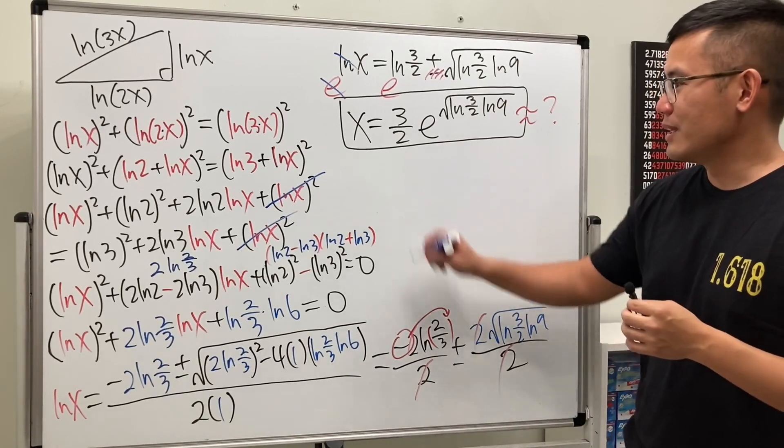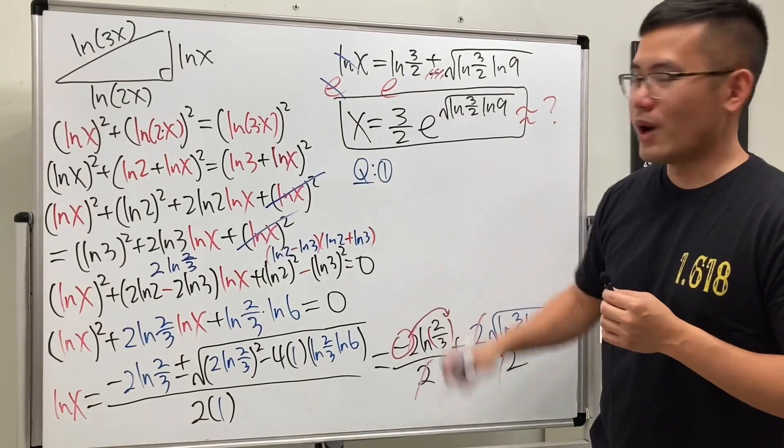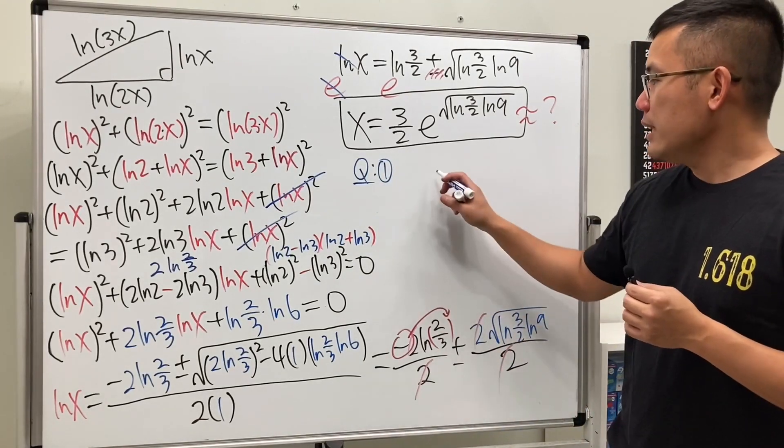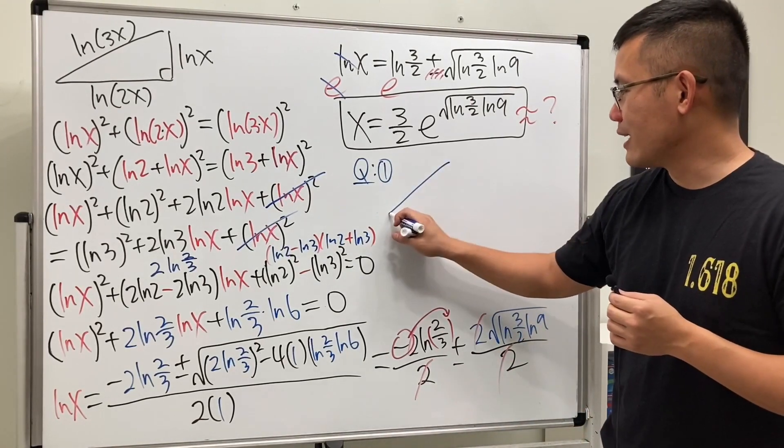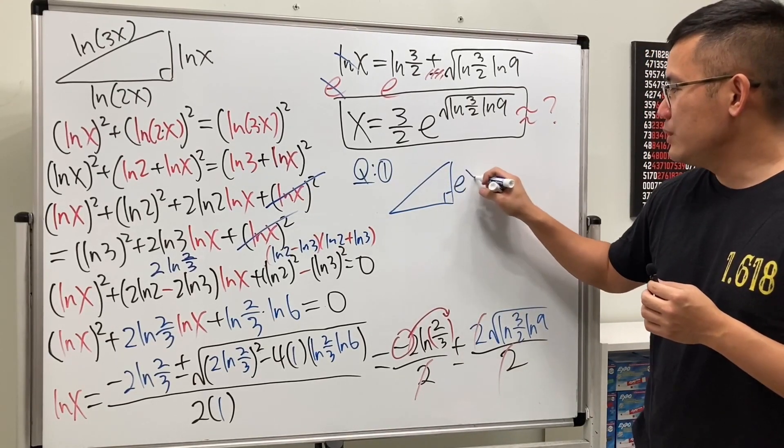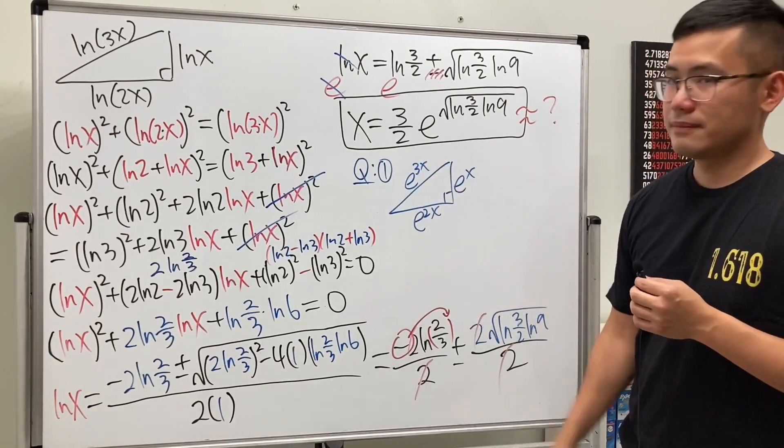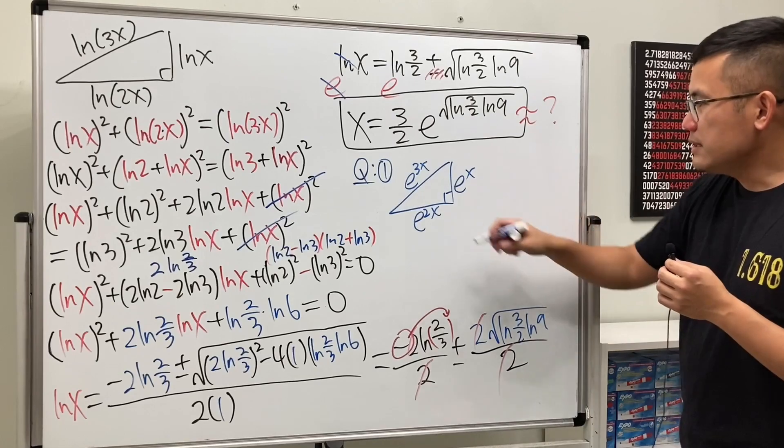If you guys would like other practice, I will give you two other choices. This is number one. We can also put exponential functions on a triangle. To make it fun, let's have patterns. Let's say e to the x, e to the 2x, and then e to the 3x. This is not bad.